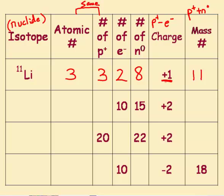Second row — this time I'm not given the mass number, but I'm given the number of neutrons. I'm also given the electrons and the charge is +2. If the electrons are 10 and the charge is +2, that means I must have 12 protons, because 12 minus 10 is positive 2. If it's 12 protons, the atomic number is 12, which means I have magnesium. For the mass number, I add protons plus neutrons: 12 plus 15 is 27. So 27 goes in the upper left-hand corner of my isotope symbol.